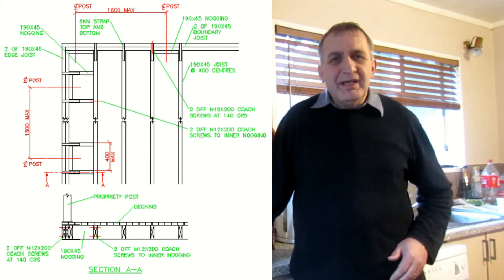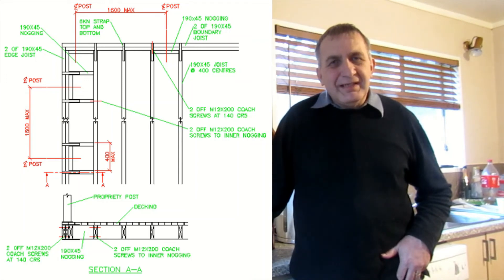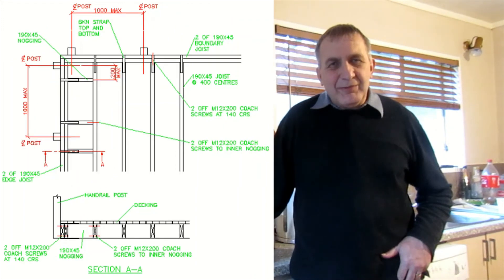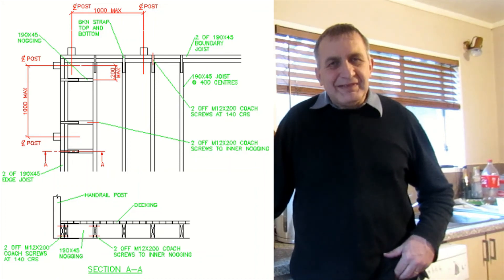Blocking is also required for handrails around the supports. In NZS 3604 there are three different figures showing the arrangement: figure 7.10A, figure 7.10B, and figure 7.10C. Depending on your arrangement, have a look at those diagrams to see just how the blocking is arranged around the handrail supports.